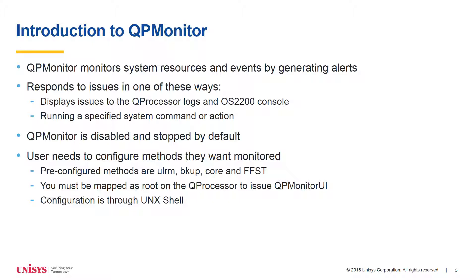There are four pre-configured methods: ULRM, BKUAP, CORE, and FFST, and the user can configure others. You must be mapped as root on the key processor to issue QP Monitor UI commands through the UNIX shell.